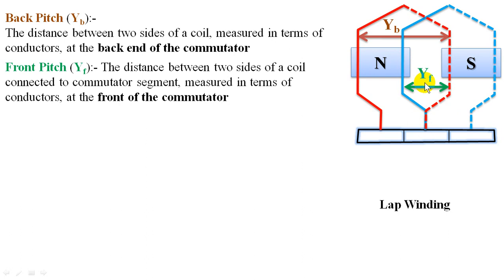The distance between the end of one coil side and the start of a successive coil under the same commutator segment is also called YF — that is called front pitch. Average pitch is the average of YB and YF. This average pitch will be near to or equal to the pole pitch measured in terms of conductors.